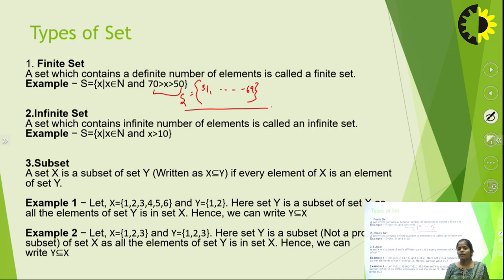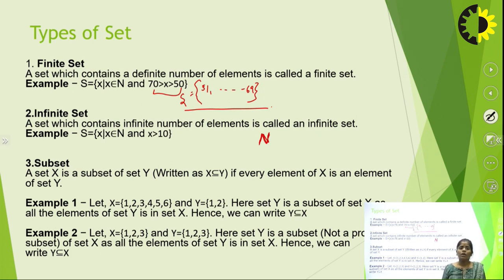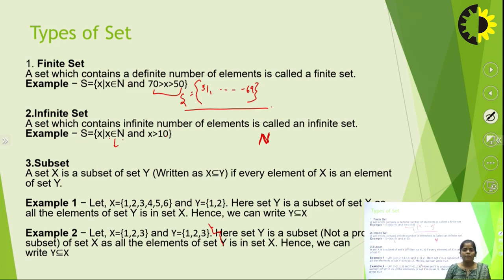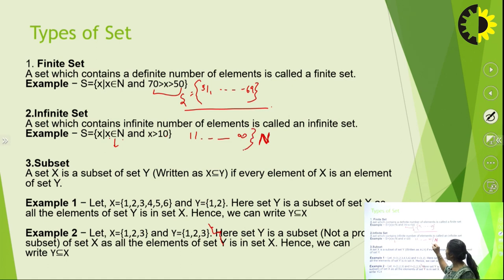An infinite set contains an infinite number of elements. For example, the set of natural numbers starts from 1 to infinity — we do not know the ending. Another example: S = {x | x ∈ N and x > 10}, starting from 11 up to infinity. Since there is no ending point, this set is infinite in nature.